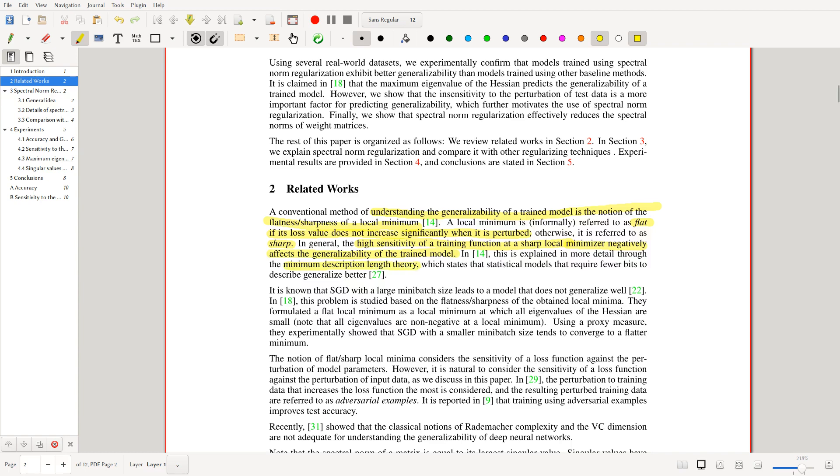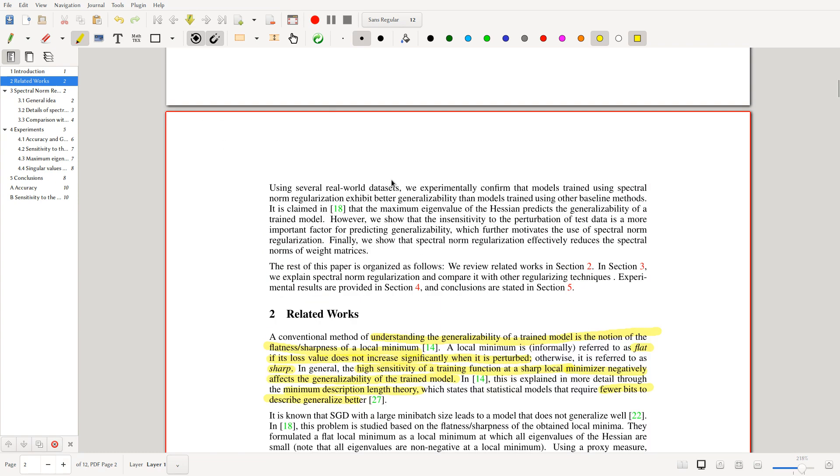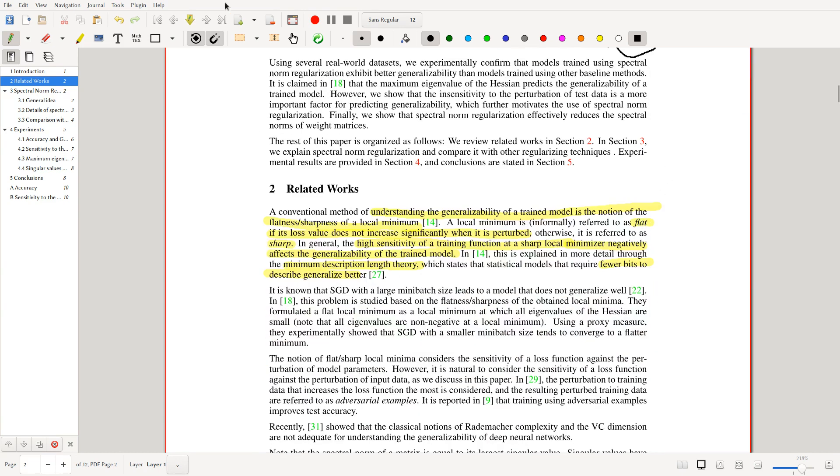And if we look at this minimum description length theory, it says that models which require fewer bits to describe generalize better. Just to go over it, if we have a loss surface which looks something like this, let me draw this better. Even though this is like slightly higher loss, it might be worth for us to land here instead of here. Because the idea is that if we land here, it might be that we just got lucky with the parameters and happened to overfit to the data. While here, it's much more stable. So it might be that actually this is a better generalization of the data. That's the idea of what they're saying with that paragraph.